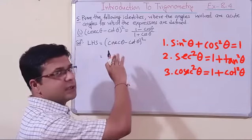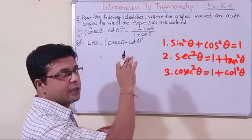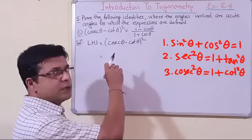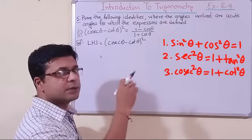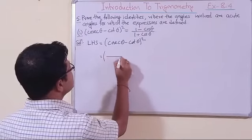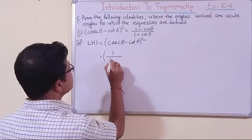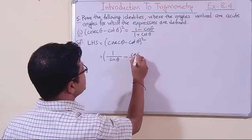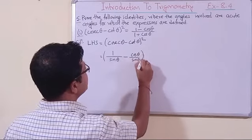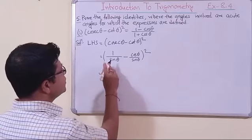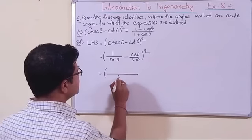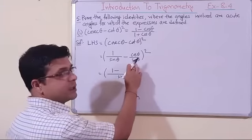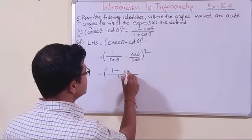The first three identities include sin²θ + cos²θ = 1 and the remaining two. So what we will do is convert these two trigonometric ratios into their simplest form in terms of sin θ and cos θ. So cosec θ is 1/sin θ, minus cot θ which is cos θ/sin θ, all whole squared. Now we will take the LCM, which is sin θ, giving us (1 - cos θ)/sin θ whole squared.